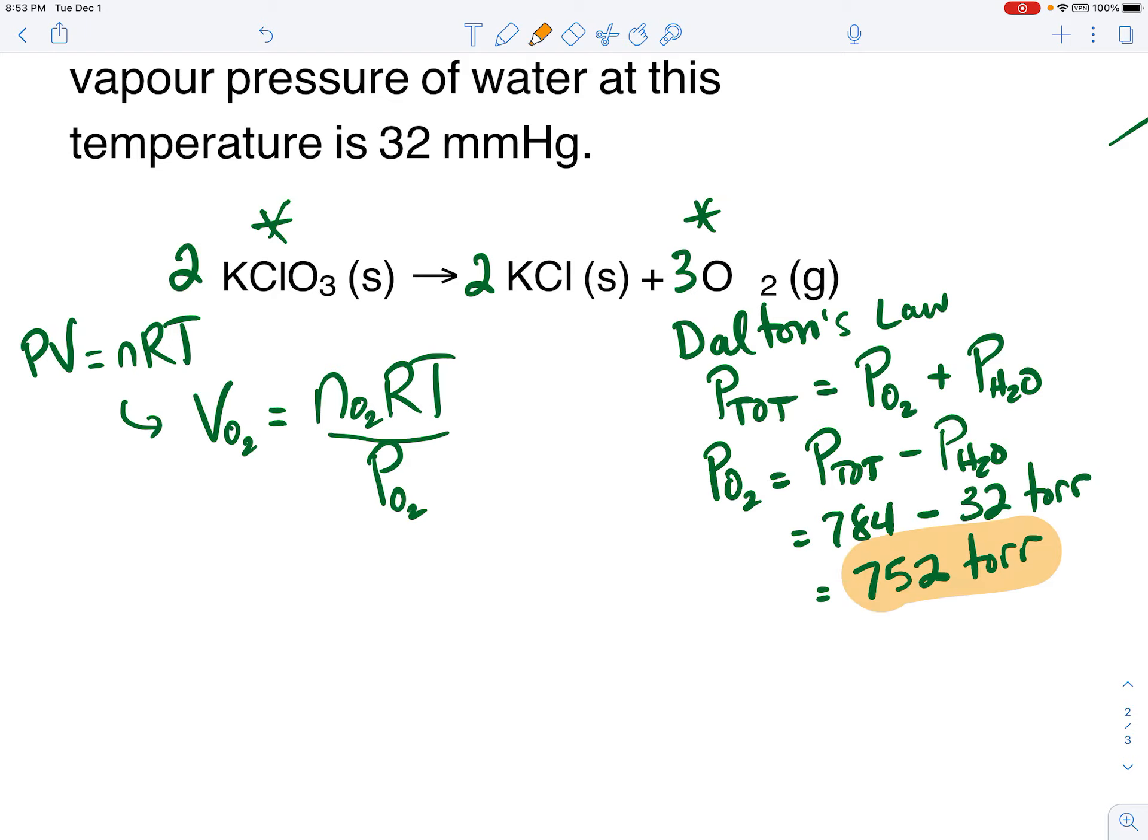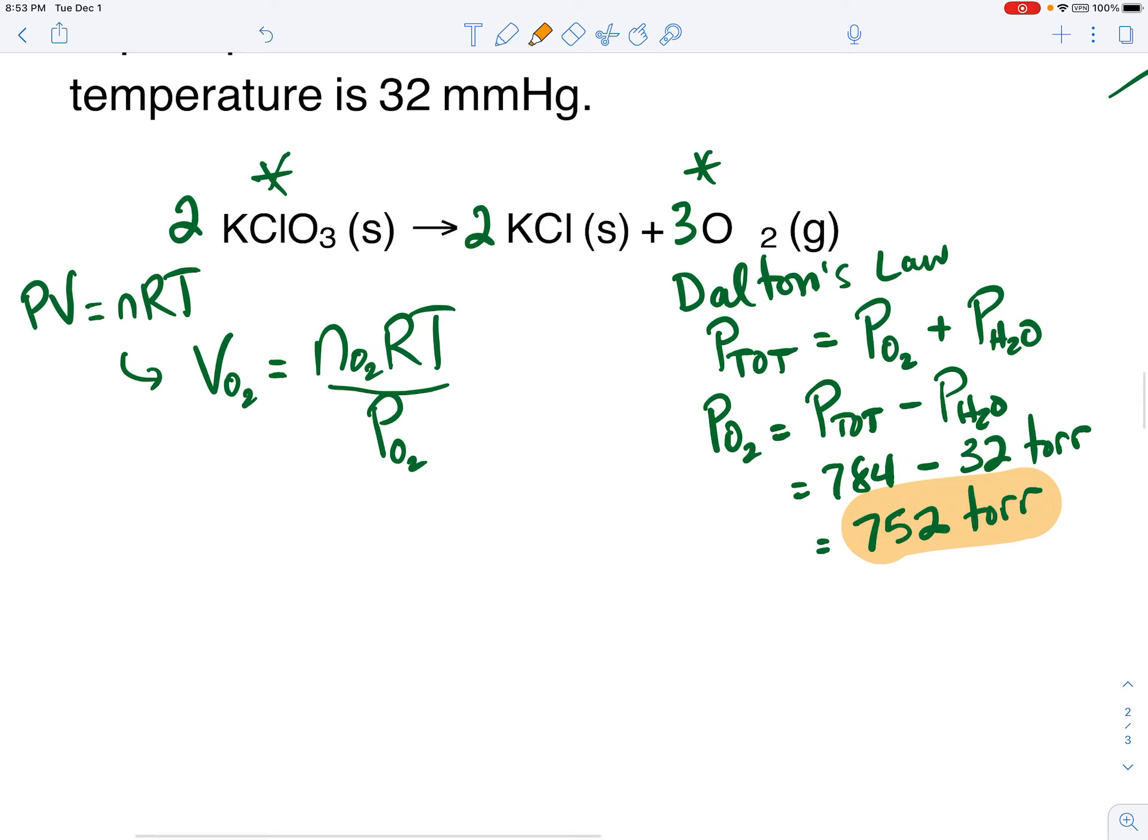So now we know the pressure of the oxygen, but it's in torr. If we're going to use the ideal gas law, we can only use atmospheres or kilopascals. So let's convert that. We'll take the 752 torr and we'll convert torr. I'll use atmospheres. One atmosphere is 760 torr. I'm going to grab a calculator and do that in just a minute. So now we know the pressure of the oxygen. We have the temperature of the oxygen. We have R. We still need to get the moles of oxygen before we can go find our volume. So that's where the stoichiometry came in.